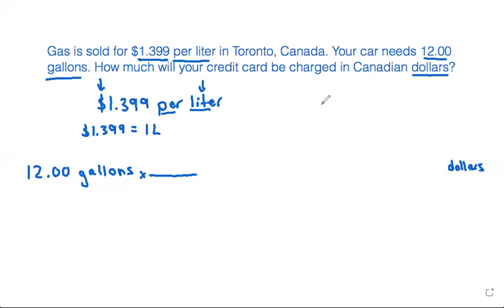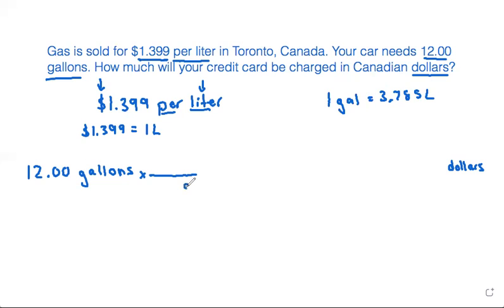Let's use the relationship between gallons and liters, which should be on your conversion factor sheet. One gallon is equal to 3.785 liters. We'll use this relationship first and put gallons on the bottom and liters on top. The numbers follow the units, so the 1 goes with gallons and the 3.785 goes with liters.